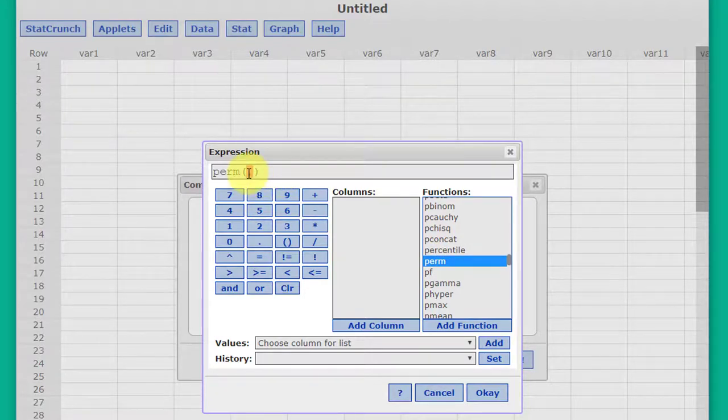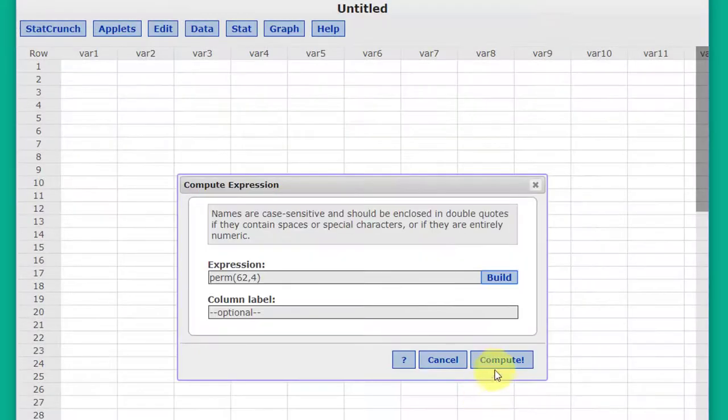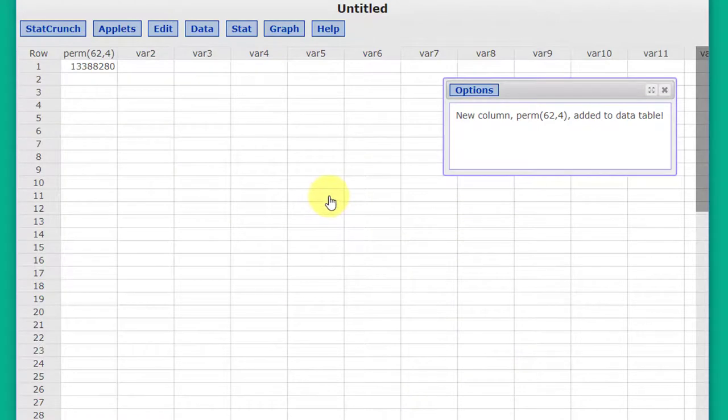And it enters the basic function. We need to enter our n, which is 62, and our r is 4. Click OK and compute, and we get that the number of slates of officers is large. It's 13.388 million different ways that we can select those officers since order matters.